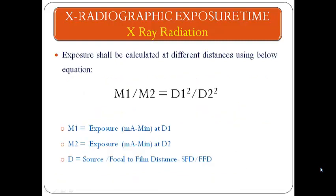Expiry shall be calculated at different distances using the equation: M1/M2 = D1²/D2². Here, M1 is the expiry in mA·min at distance D1, and M2 is the expiry in mA·min at distance D2. D is the source or focal-to-film distance, which we call SFD or FFD.